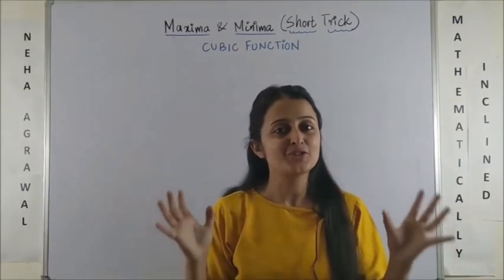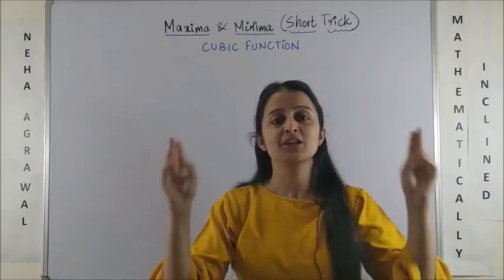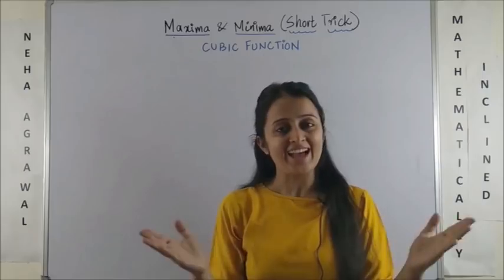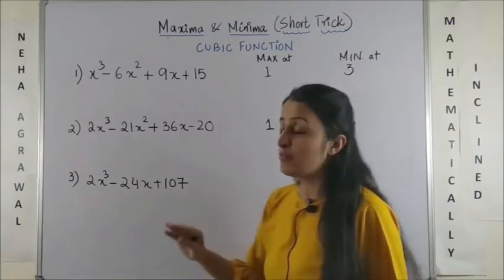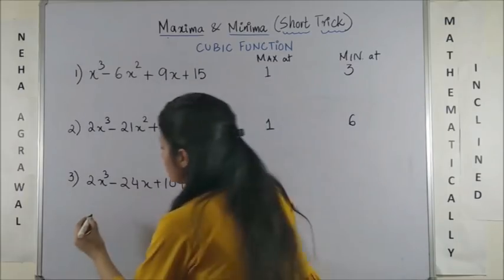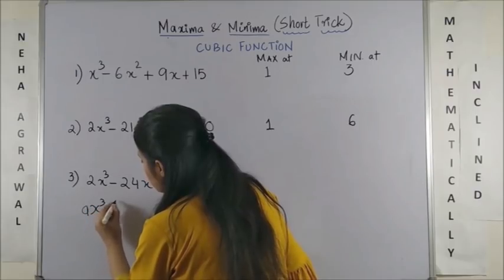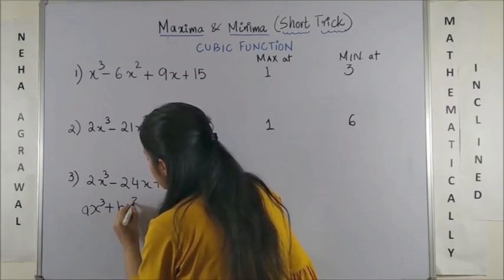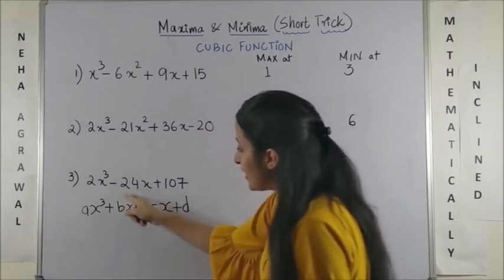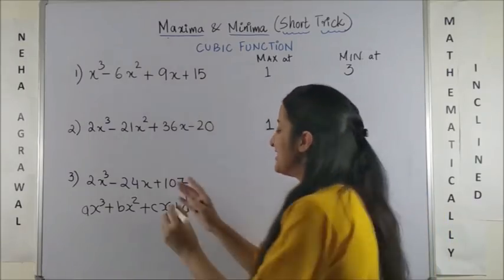So, I make a lot of shortcut videos as well as your full concept videos. You just have to write in the comment section below which one do you need and I'll be happy to make it. Now, moving to question 3. If you compare it with a standard cubic function that is ax cube plus bx square plus cx plus d. So, if you actually compare there is no term b over here. So, you need to be very very careful.